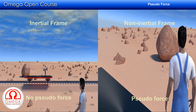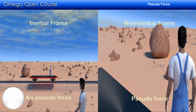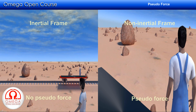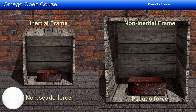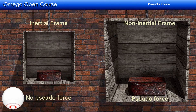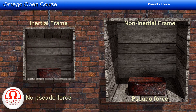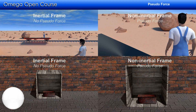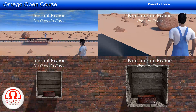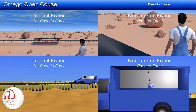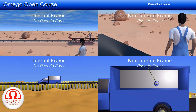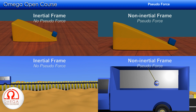To conclude: whether pseudo-force acts depends on your choice of reference frame. If your frame is inertial (non-accelerating), there is no pseudo-force. If you choose an accelerating frame, a pseudo-force acts on all objects in the direction opposite to the frame's acceleration, with magnitude equal to mass of the object times acceleration of the frame. Every question can be solved in an inertial frame, but non-inertial frames can simplify certain problems and reduce solving effort.